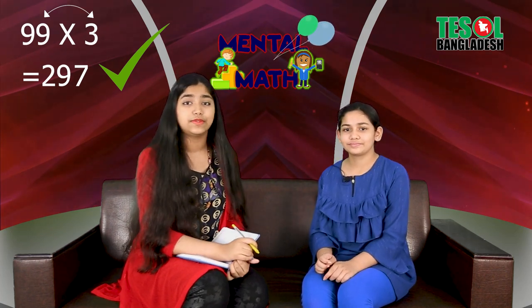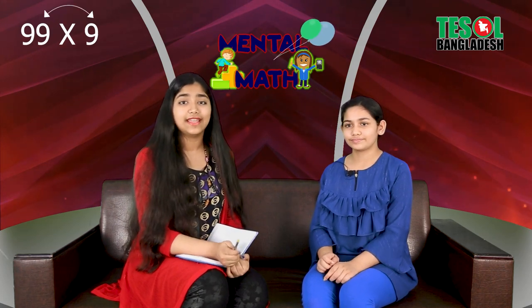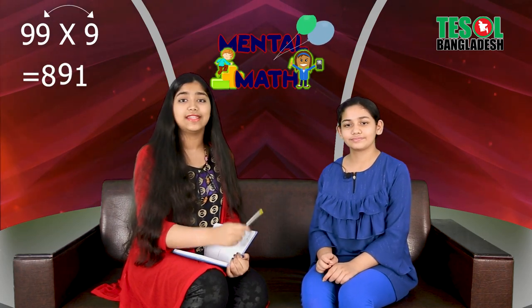So we can also do 99 fours, which becomes 3, 9, 6. 99 fives are 4, 9, 5. 99 sixes are 5, 9, 4. 99 sevens are 6, 9, 3. 99 eights are 7, 9, 2. 99 nines are 8, 9, 1. And 99 tens are 9, 9, 0.